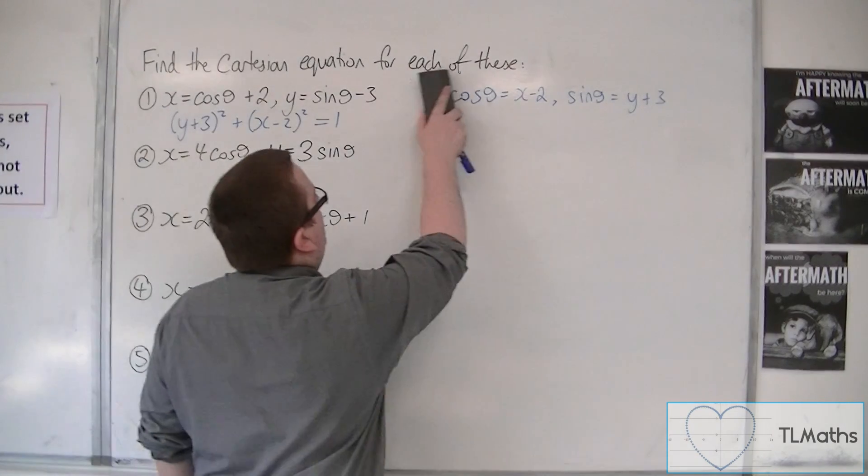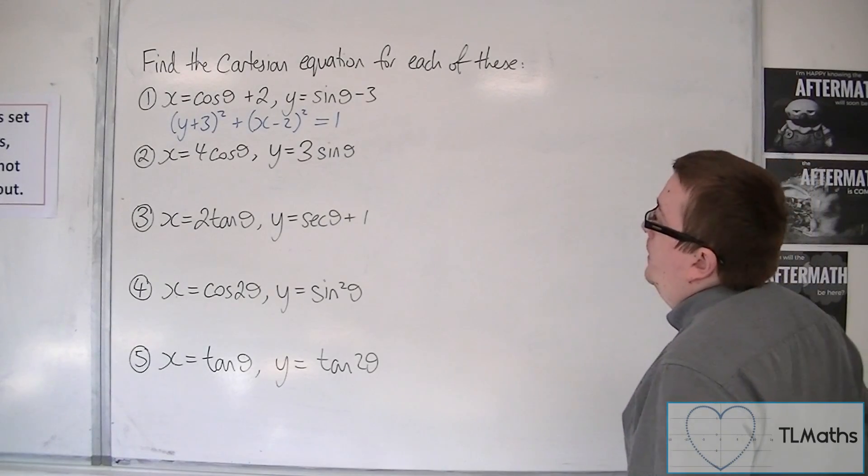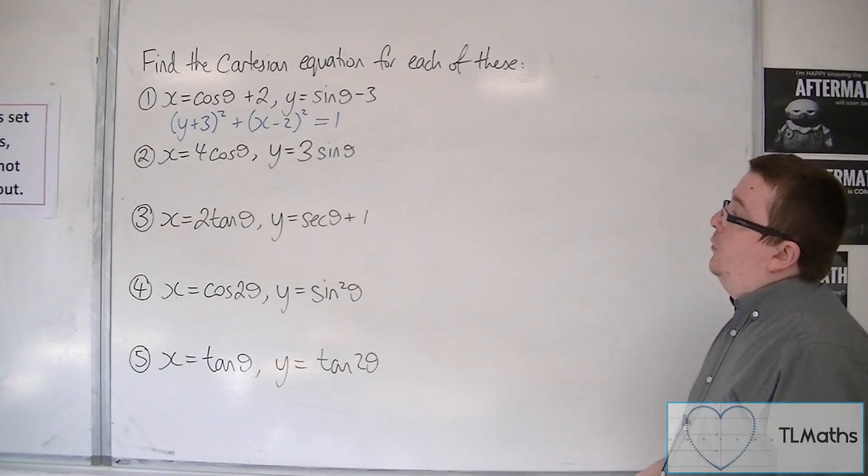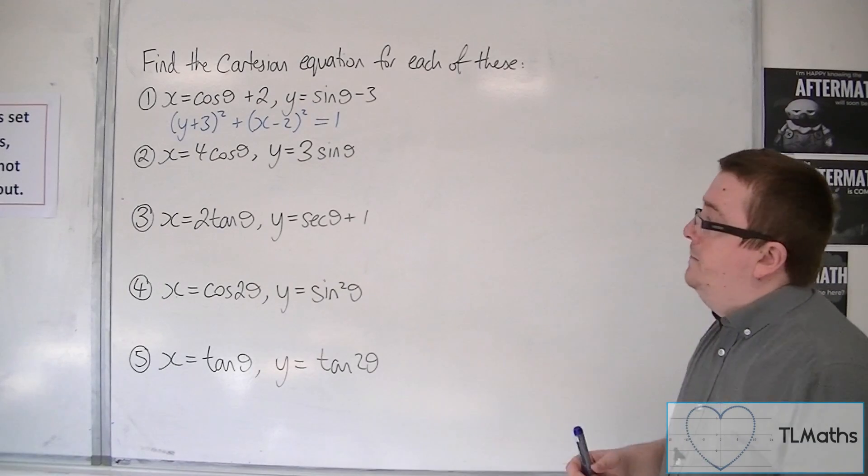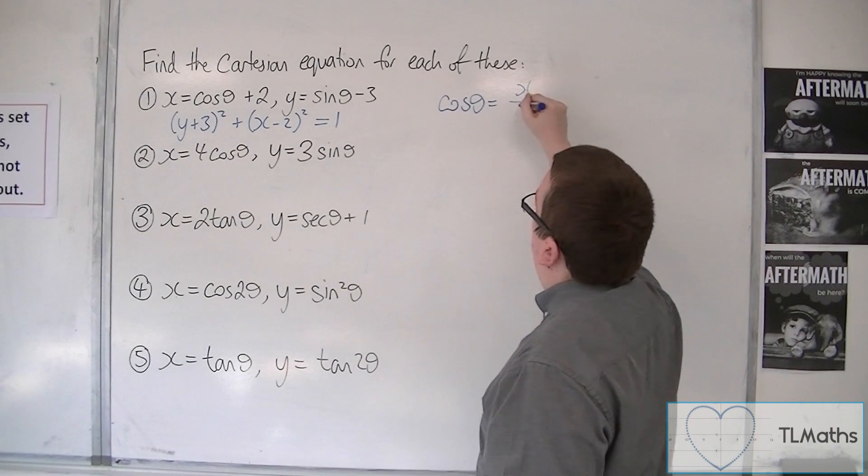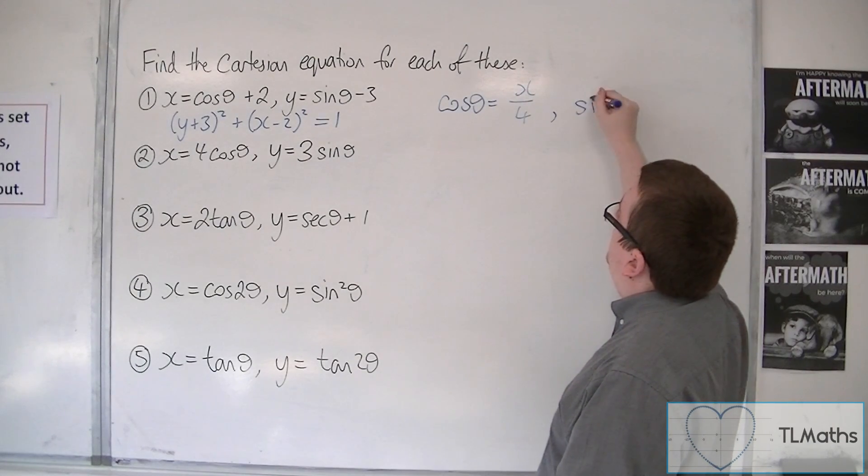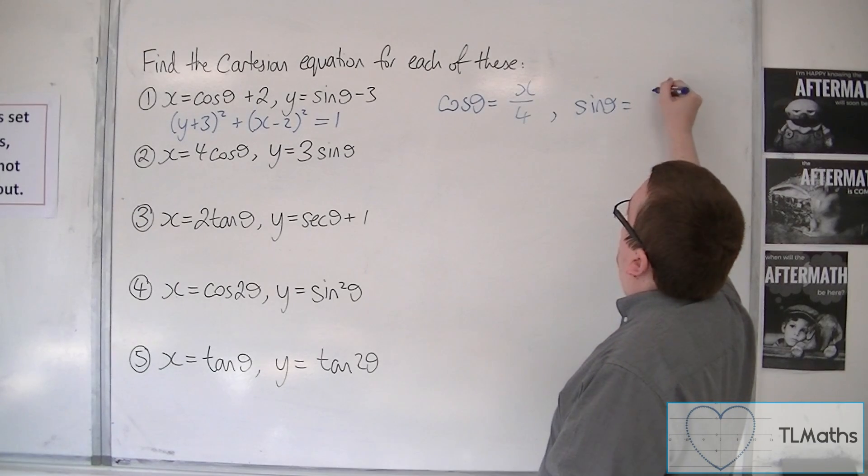Let's have a look at the second one. We have x equals 4 cos theta, y equals 3 sin theta. So I could write cos theta is equal to x over 4, or a quarter of x, and sin theta is equal to y over 3.